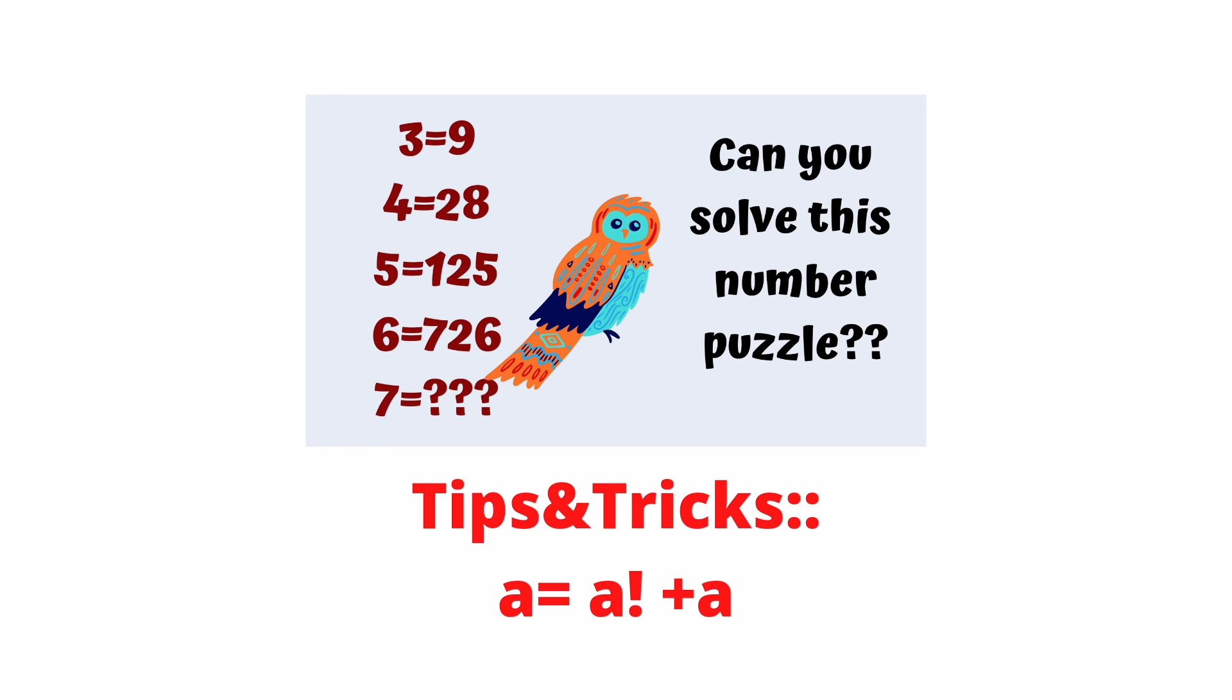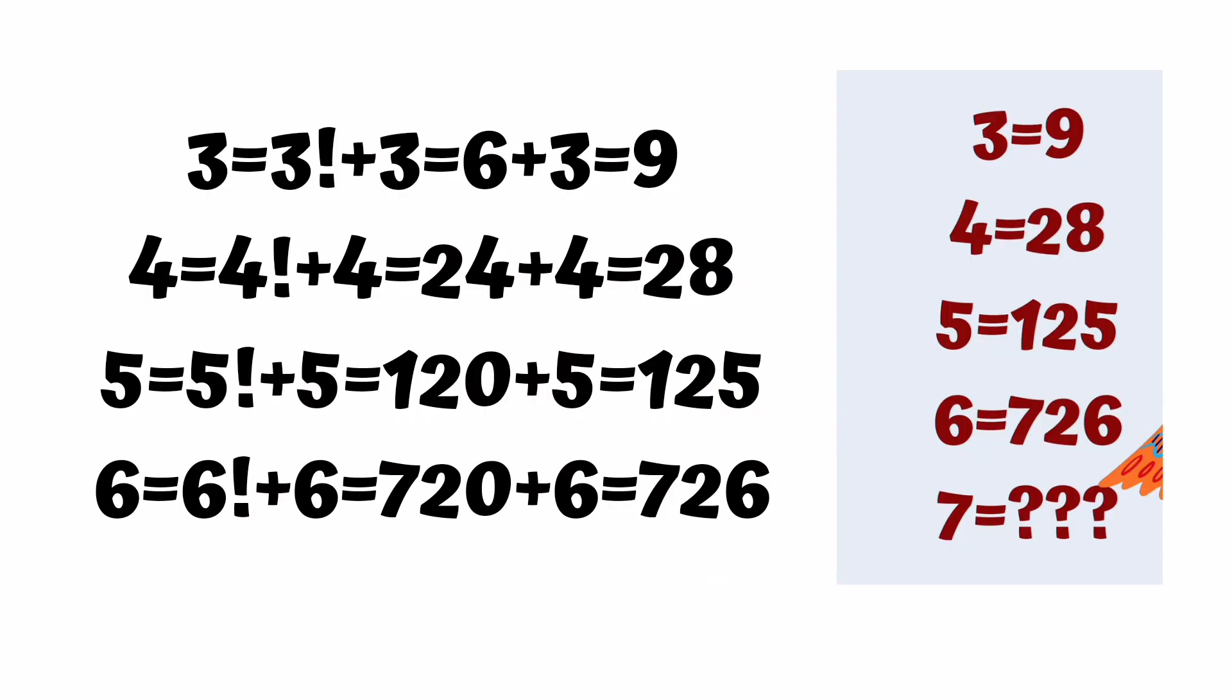First row is 3: 3 factorial plus 3, solve and answer is 9. Similarly, you will solve 4 factorial value is 24, add and answer is 28. 5 factorial value is 120 plus 5 is 125. 6 factorial value is 720 plus 6, add and answer is 726.